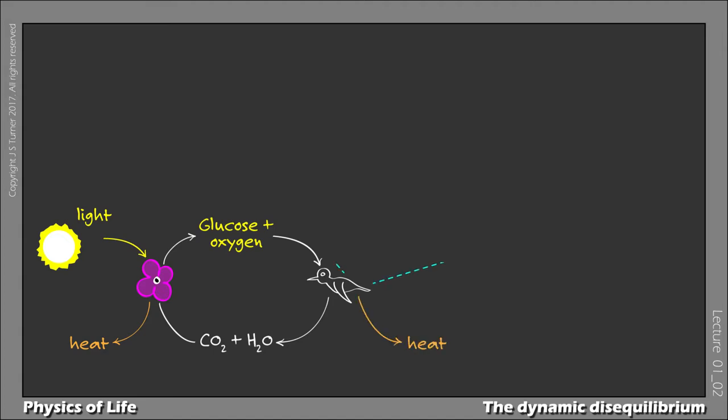If we take a closer look at what's happening inside the hummingbird, we see a similar suite of energetic transactions. The glucose and the oxygen serve as free energy and oxygen to power the conversion of ADP plus phosphate into ATP,